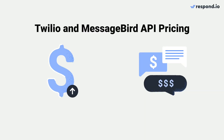Although WhatsApp switched to conversation-based rates, some WhatsApp partners still use the previous pricing model. For example, Twilio and MessageBird charge a markup fee for all sent messages on top of WhatsApp API conversation fees. Twilio also charges additional fees for all received messages. At scale, this can get expensive fast.